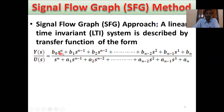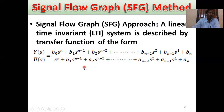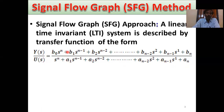Y(s)/U(s) equals V0·s^N plus V1·s^(N-1) plus V2·s^(N-2) plus dot dot dot plus V(N-2)·s² plus V(N-1)·s plus VN in the numerator, divided by s^N plus A1·s^(N-1) plus A2·s^(N-2) plus dot dot dot plus AN in the denominator. This is the general transfer function for the case M equals N, because in general, numerator power is always less than denominator power, but here numerator and denominator powers are equal. So this is the Nth order differential equation.